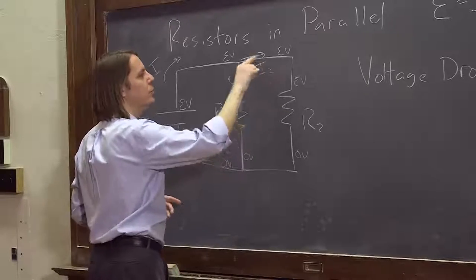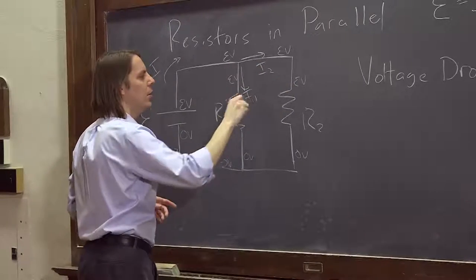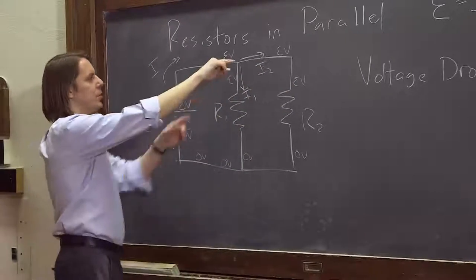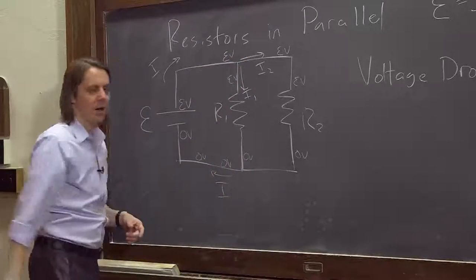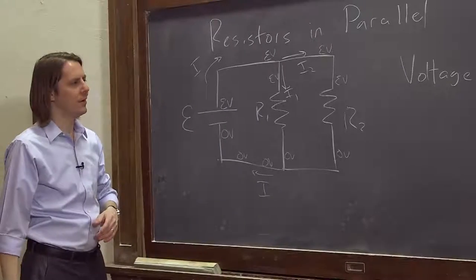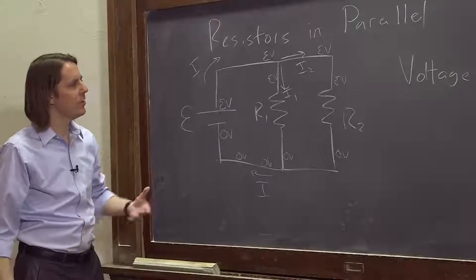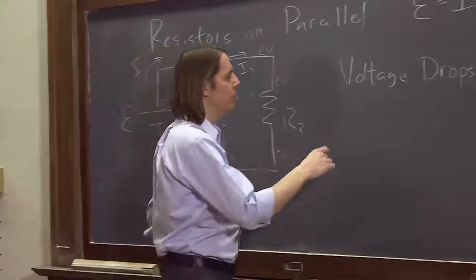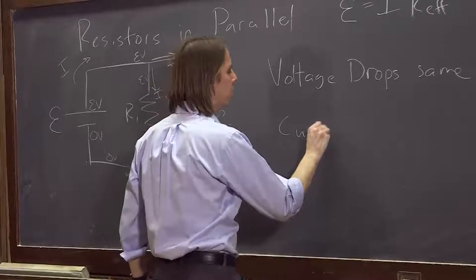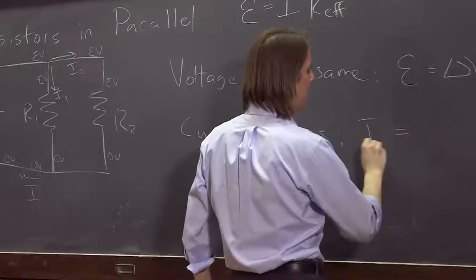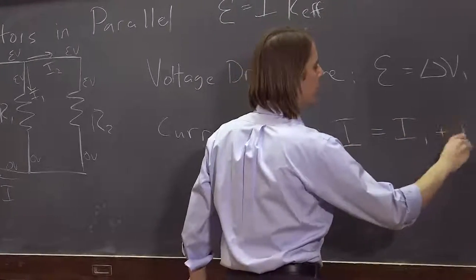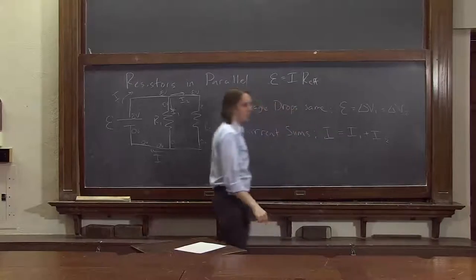You'll get I2 will go that way. I1 will go this way. So the charge splits at that point, and it comes back together to make I of current again. But since charge is conserved, it has to sum. You can't lose any of your charge, so the current sums, meaning that I equals I1 plus I2.